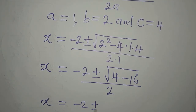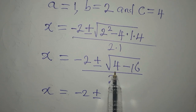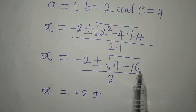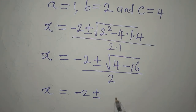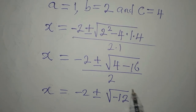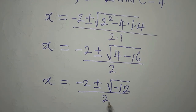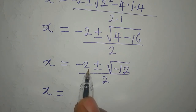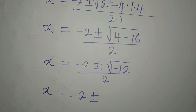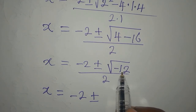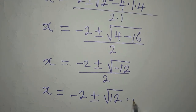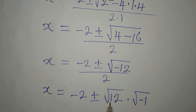So x equals negative 2 plus or minus the square root of 4 minus 16. Note: you will get it wrong if you take the square root of these two numbers separately. So we have the square root of 4 minus 16, which is the square root of negative 12, divided by 2. We cannot use a calculator for the square root of a negative number, but we can split it: square root of 12 times square root of negative 1.